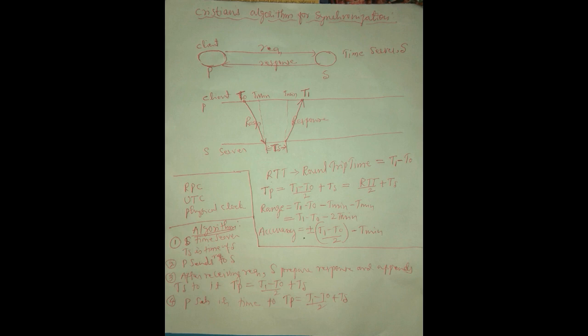The response is received by the client at time t1. tmin represents the minimum time consumed by the client to send the request. Similarly, tmin on the server side represents the minimum time consumed by the server to send back the response.